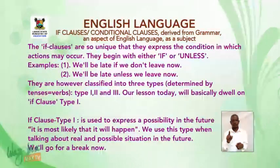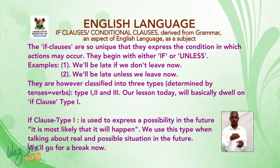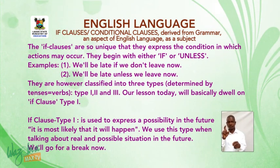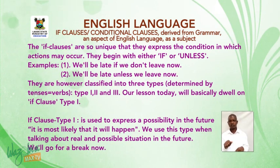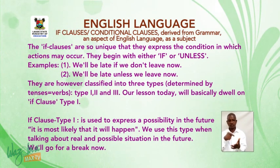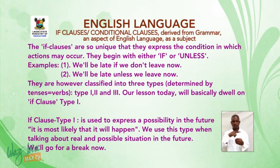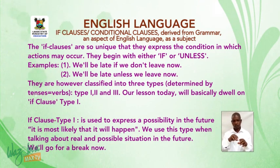We have type 1, type 2, and type 3. Our lesson today will basically dwell on if clause type 1. If clause type 1 is used to express a possibility in the future. It is most likely that it will happen. We use this type when talking about real and possible situations in the future. And now we'll go for a break.